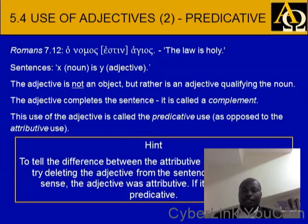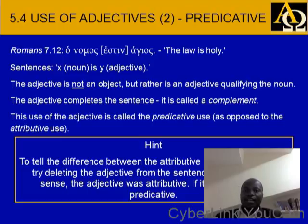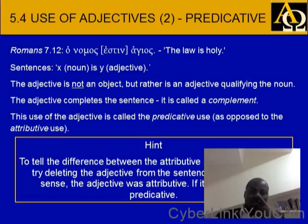Let's look at the use of adjectives: predicative. Adjectives function predicatively, attributively, or substantively. For example, the law is holy — that's predicative. The sentence pattern is X noun is Y adjective. The adjective is not an object but rather is qualifying the noun. The adjective completes the sentence and is called a complement. If you remove the adjective the sentence does not mean anything — then you know it's predicative, as opposed to attributive.